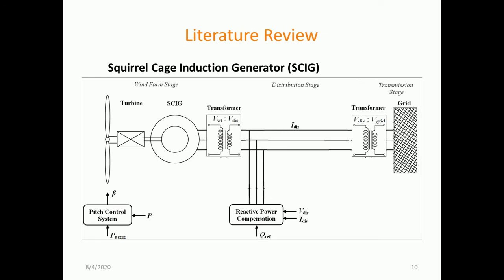Considering a basic squirrel cage induction generator, we can observe that this is the general topology for wind power generation. It generally employs a turbine — a windmill — where the blades are almost 60 to 80 meters above the ground level and are of almost 88 meters in length. They harness the wind energy, and finally a generator is used to convert the mechanical energy developed by the turbine into electrical energy.